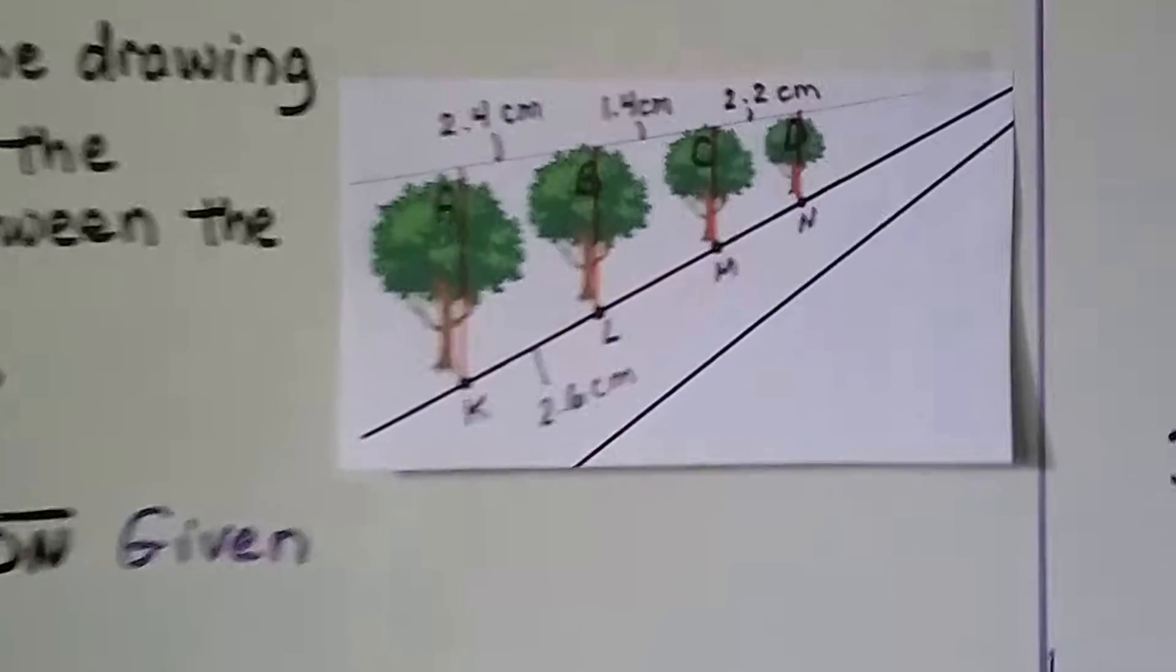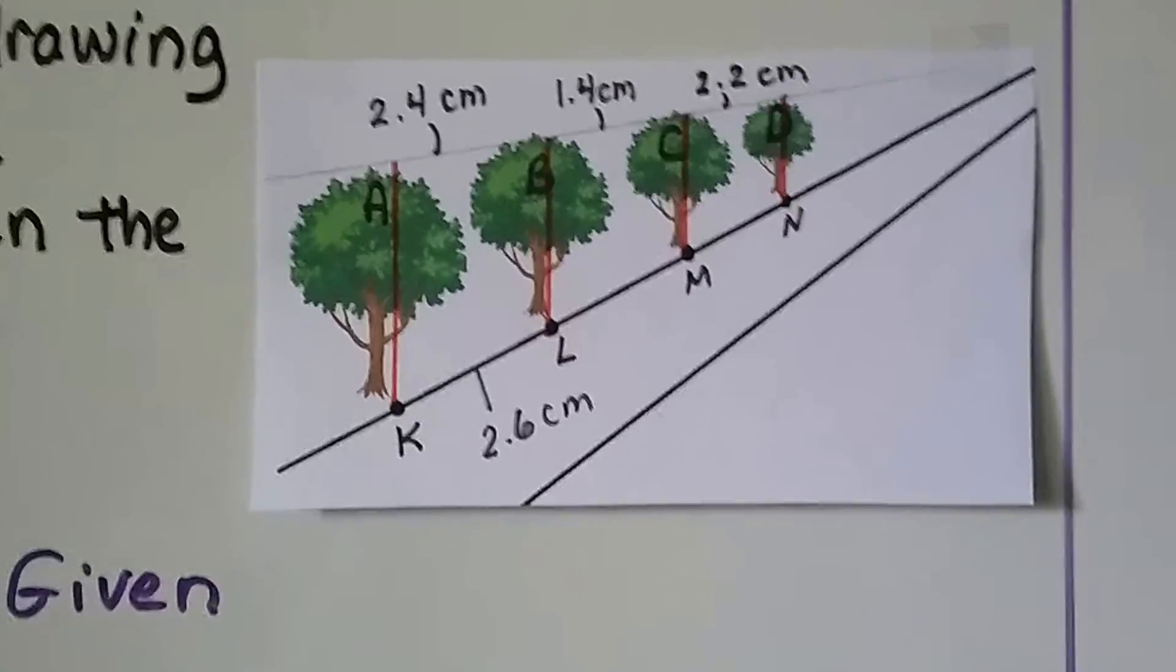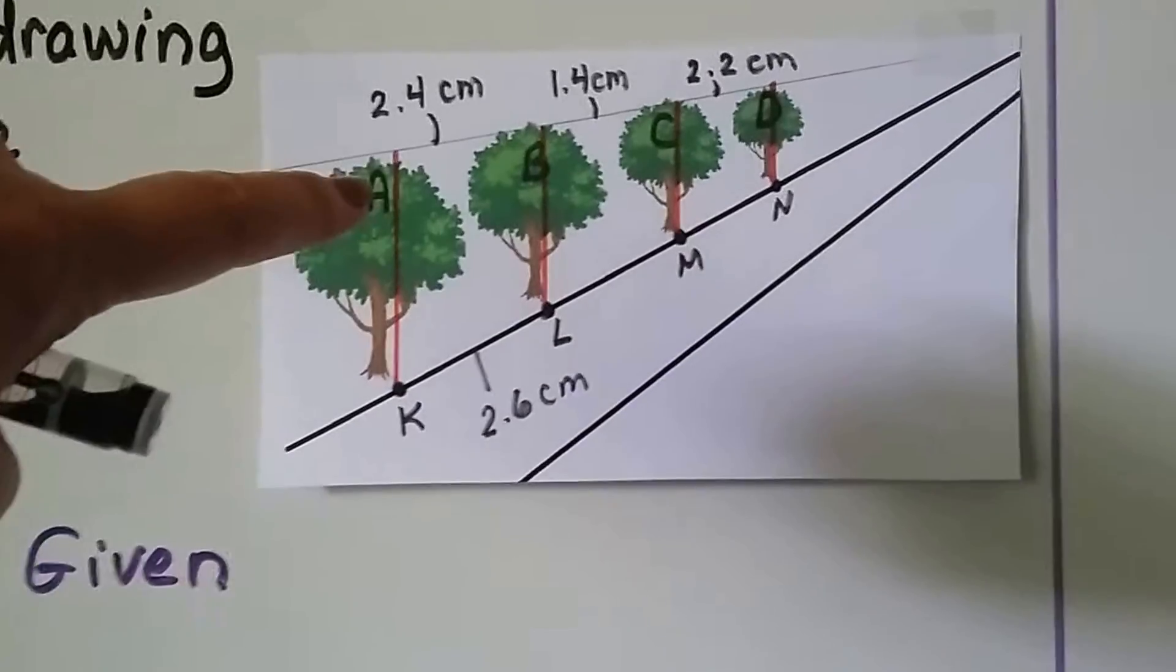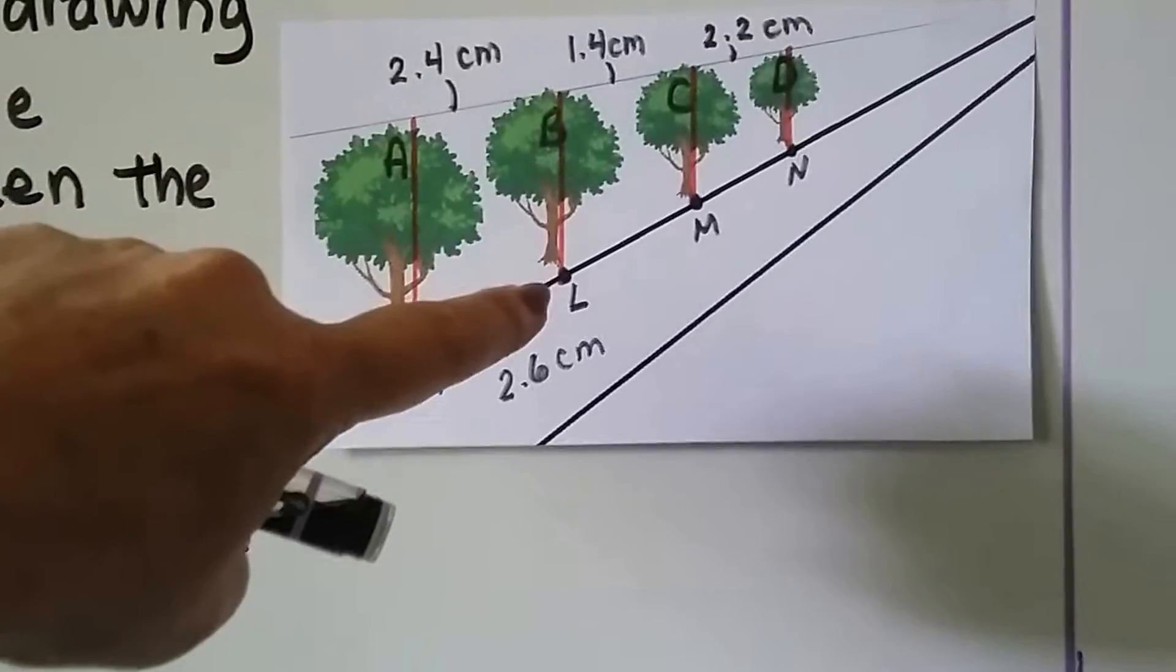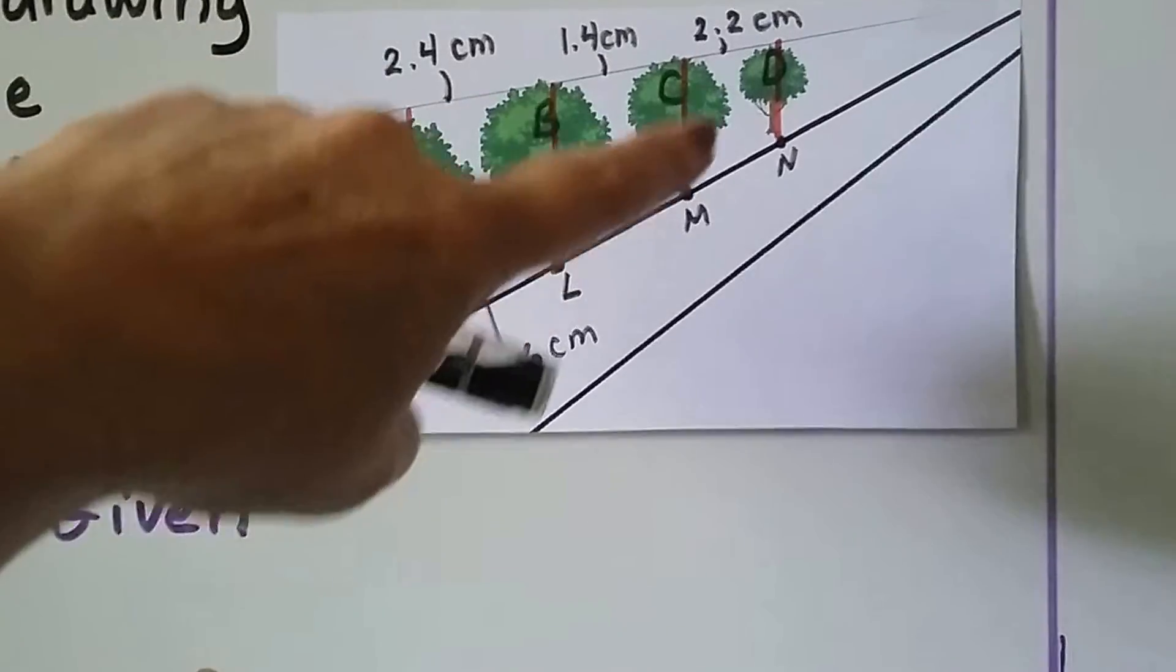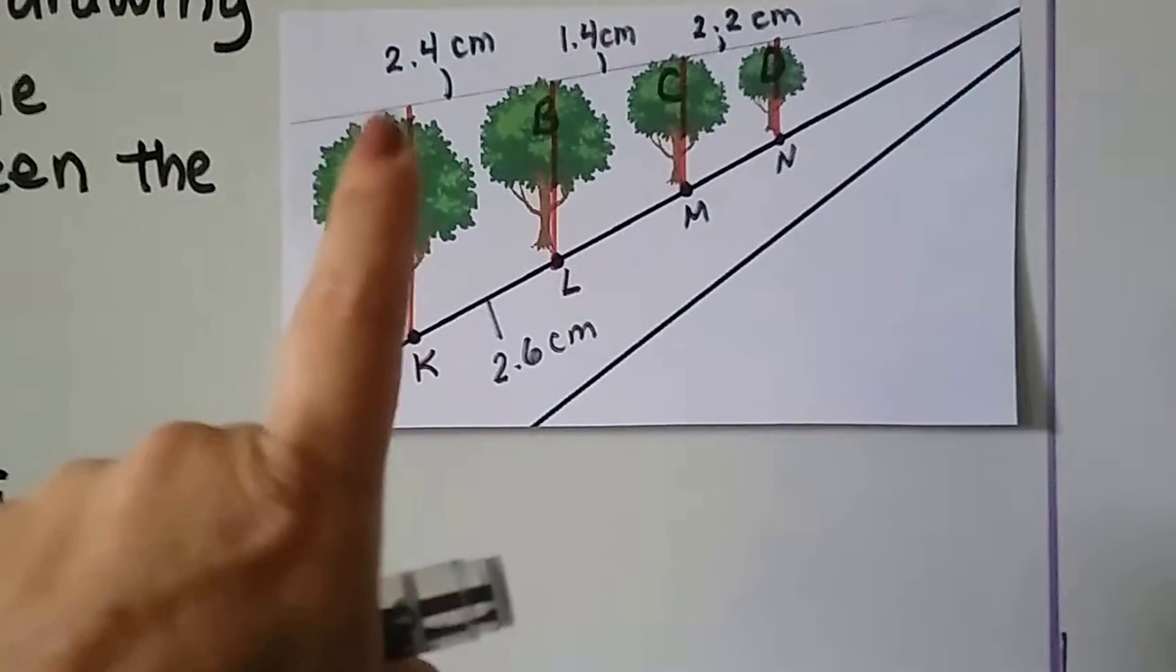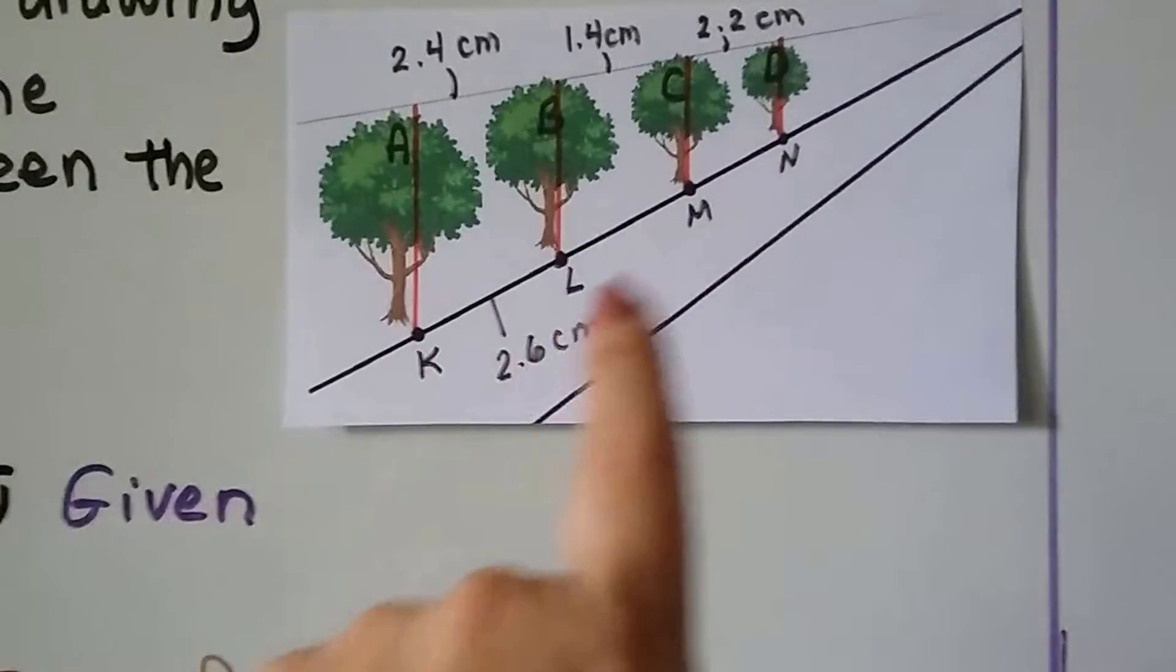So take a look at this diagram. It's a tree-lined street. And this is tree A. So this point here is A, and that's K. We have B up here and L, C and M, and D and N. So it goes A, B, C, D, K, L, M, N.